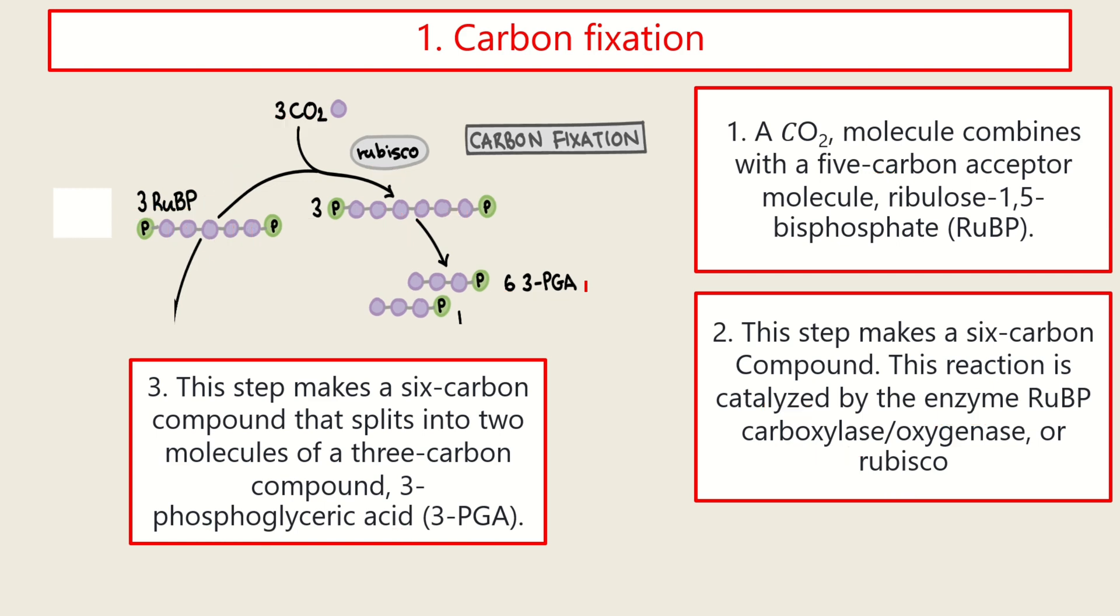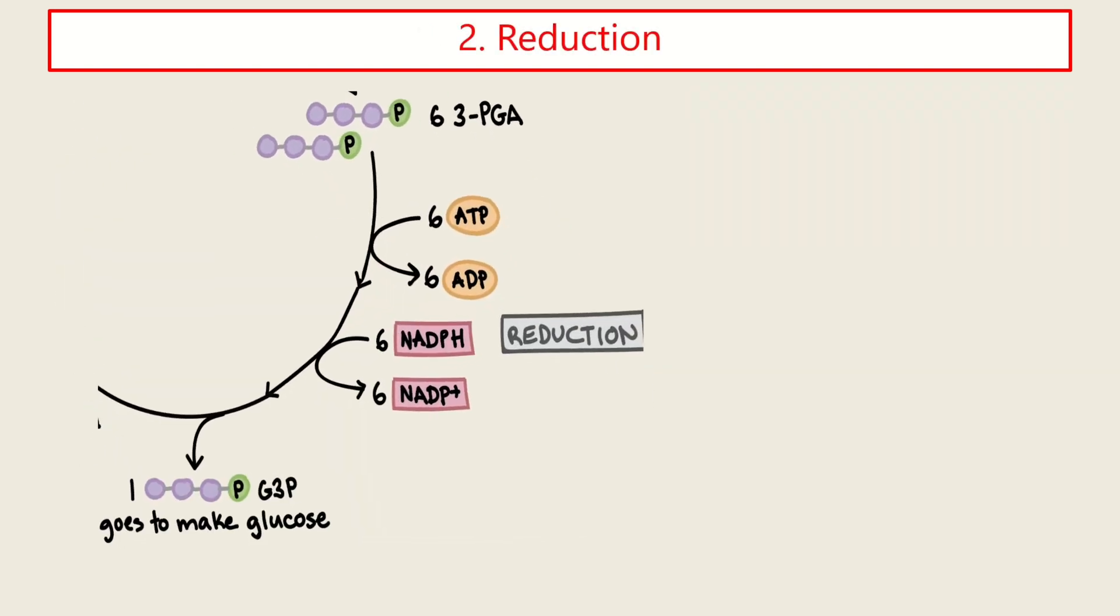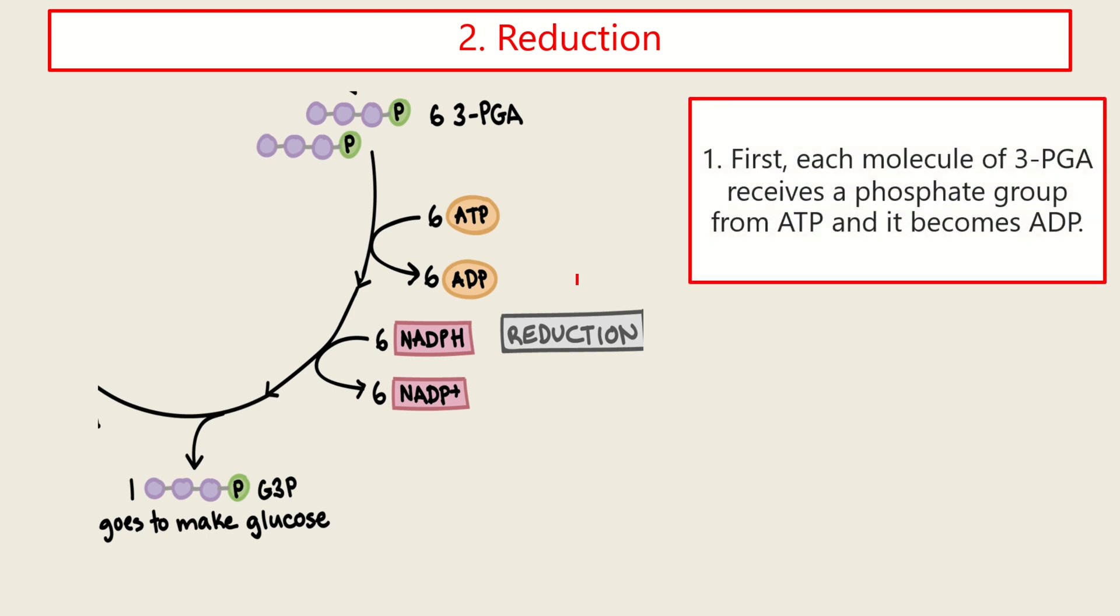Next, reduction. Each molecule of 3-PGA receives a phosphate group from ATP and it becomes ADP. So we all know that ATP comes from the light reaction. So the job of the ATP is to carry the energy.